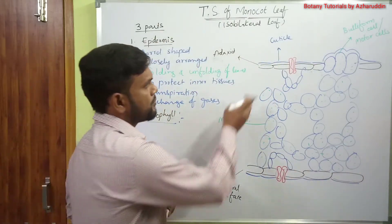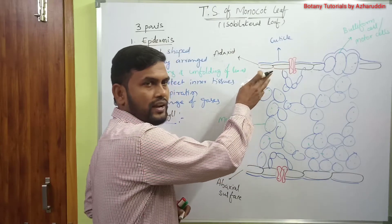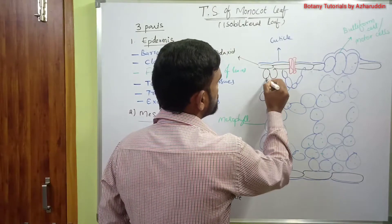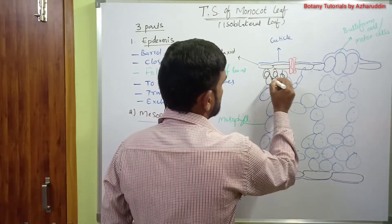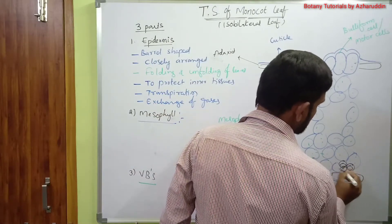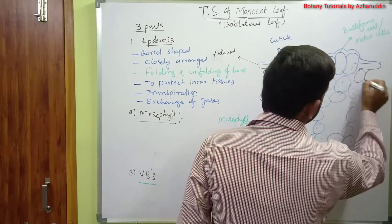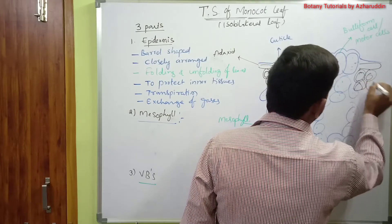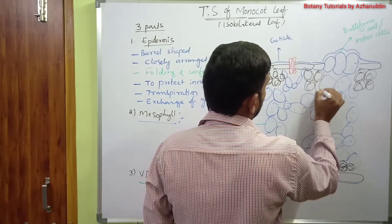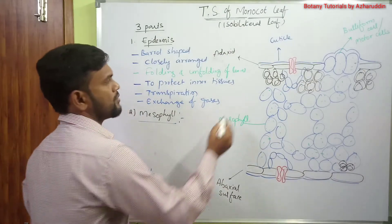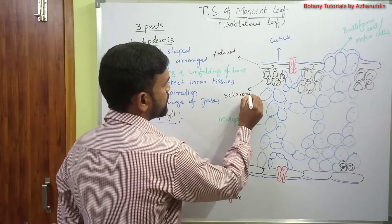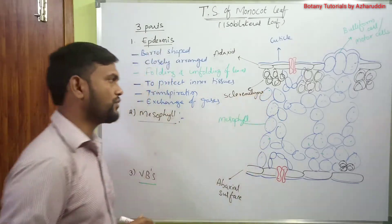In some plants, below the epidermis in the mesophyll, sclerenchyma tissue is present. This sclerenchyma tissue gives mechanical support. The sclerenchyma cells are closely arranged, contain thick walls, and give mechanical strength to the leaf.